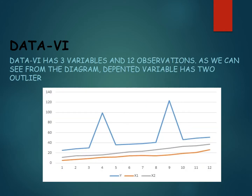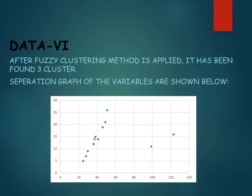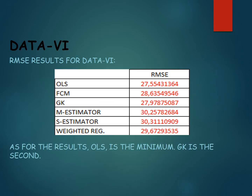Data 6 has three variables and 12 observations, and the dependent variable has two outliers. After the fuzzy clustering method is applied, three clusters are found. The RMSE results show that ordinary least squares is the minimum and Gustafson-Kessel is second.